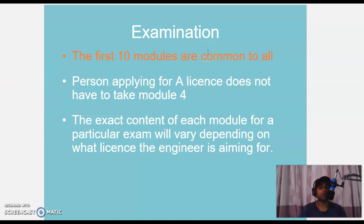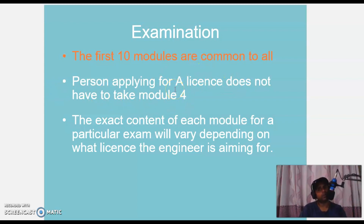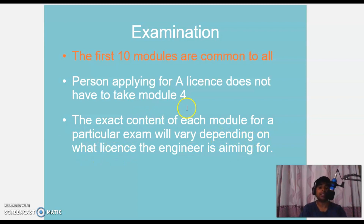Now moving to the rules of the examination. The first 10 modules are common to all, out of 17 modules total. Persons applying for the Category A license do not have to take module 4. The exact content of each module for particular exams will vary depending on what license the engineer is aiming for.